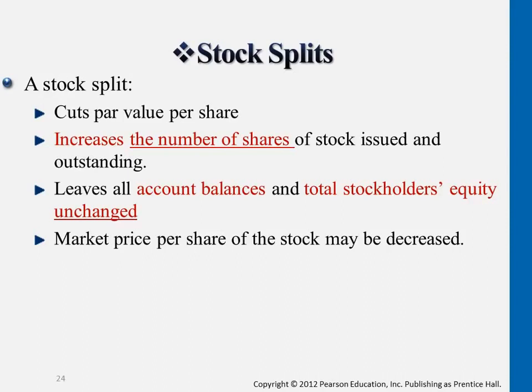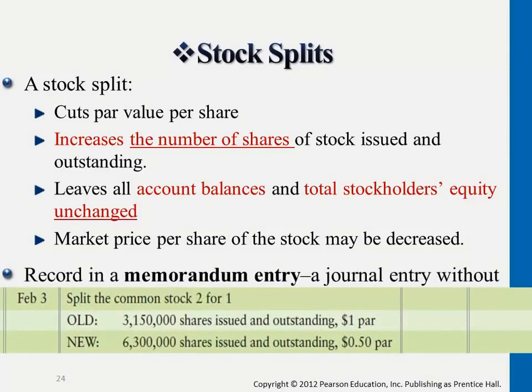That's the background on why a company wants to do a stock split. In terms of reporting this on the statements, there's really no journal entry — just a memo entry. This is pretty much the only memo entry you see in the entire course. It simply states what happened: for example, on February 3rd, the company split its common stock two-for-one. The old number of shares originally issued is listed on one line, and the new number of shares — double the original — is listed on the second line.